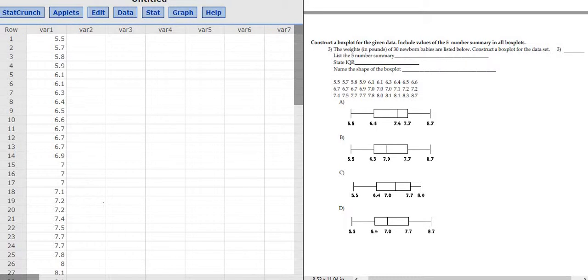Problem number three. The weights in pounds of 30 newborn babies are listed below. It says to construct a box plot for the data set, list the five number summary, state the IQR, and name the shape of the box plot.